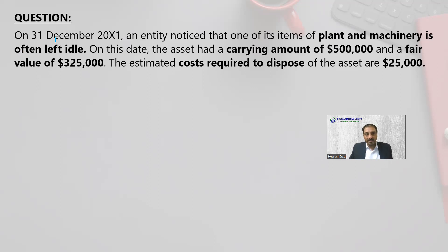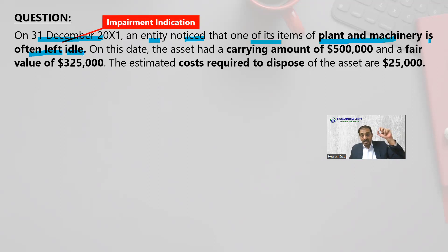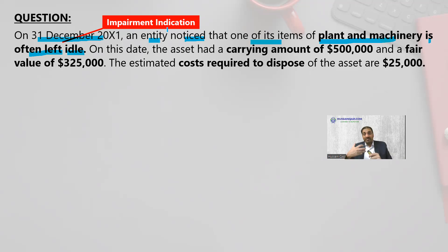On 31st December X1, the entity noticed that one of its items of plant and machinery is often left idle. So once you read 'often left idle,' that means impairment indication. So if it's about impairment indication, now it's time for an impairment test.